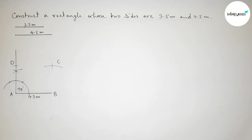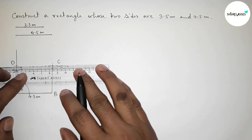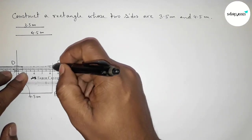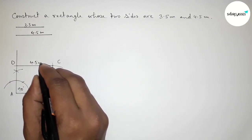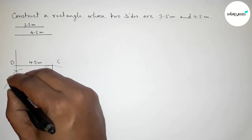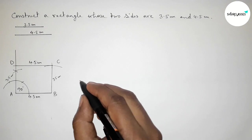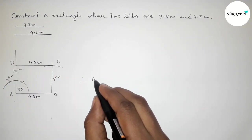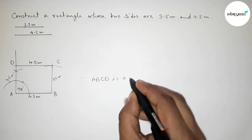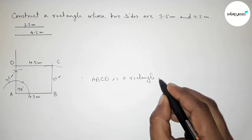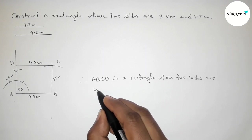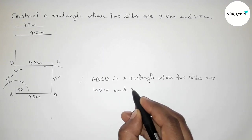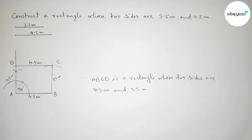Marking point C and point D. Joining line BC, then joining line CD to complete the rectangle. This side is 4.5 centimeters, this side is 3.5 centimeters, and the opposite side is also 3.5 centimeters. Therefore, ABCD is a rectangle whose two sides are 3.5 centimeters and 4.5 centimeters.